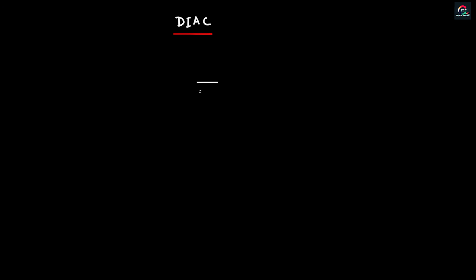So we will start with the Diac symbol. Let me show you. This is the left type of terminal. You will call it MT1. This is MT2. That is the right type of terminal. After a Google search, you will find MT1 and MT2.